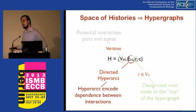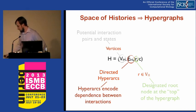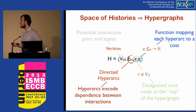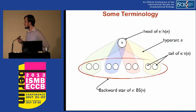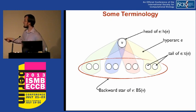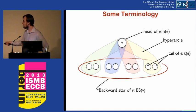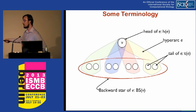Some basic terminology: V is some pair of proteins in an interaction state, and these are all pairs of proteins in interaction states related to a head node. This yellow blob is a hyper arc E; we denote the parent as the head of E and the nodes below as the tail of E. If we look at the set of all potential interactions that could come from an initial interaction, we denote this as the backward star of V — the set of all hyper edges and vertices within them.